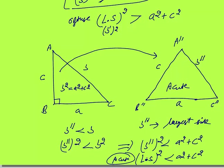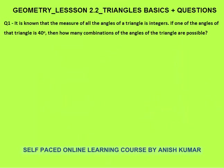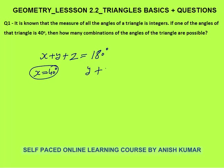Now let's discuss some questions based on concepts from this lesson and previous lessons. The question is: it is known that all angles in a triangle are integers. If one of the angles is 40 degrees, how many combinations of angles are possible? Let x, y, z be the three angles. Since their sum is 180 degrees and x is 40 degrees, y plus z must equal 140 degrees.